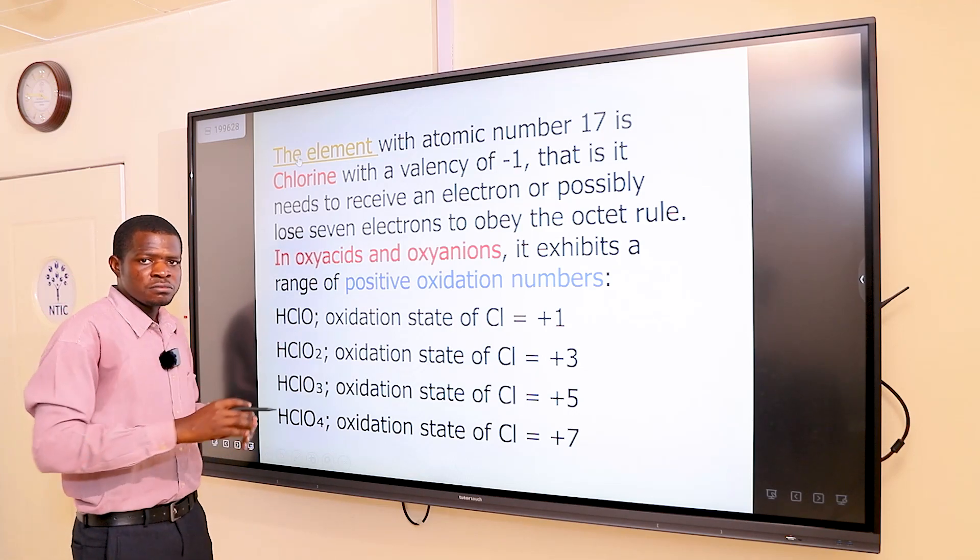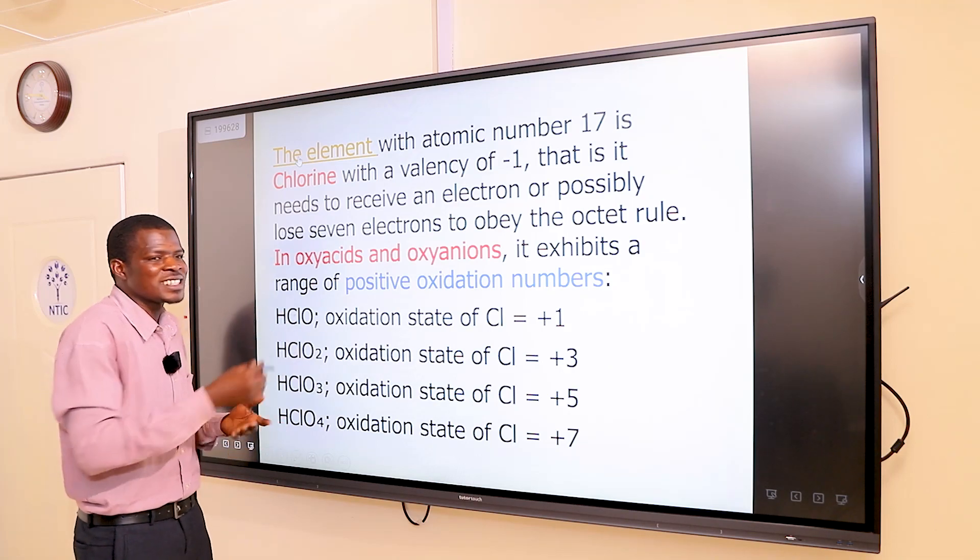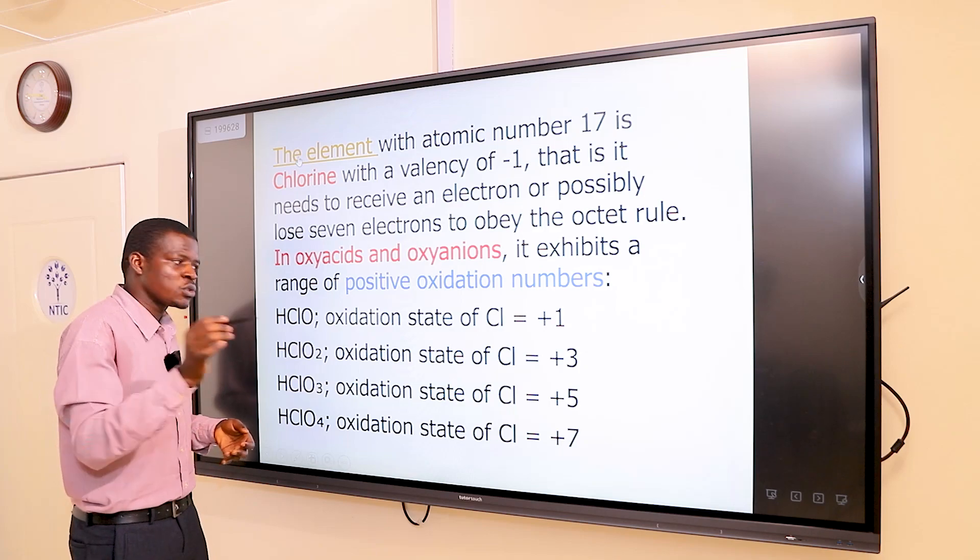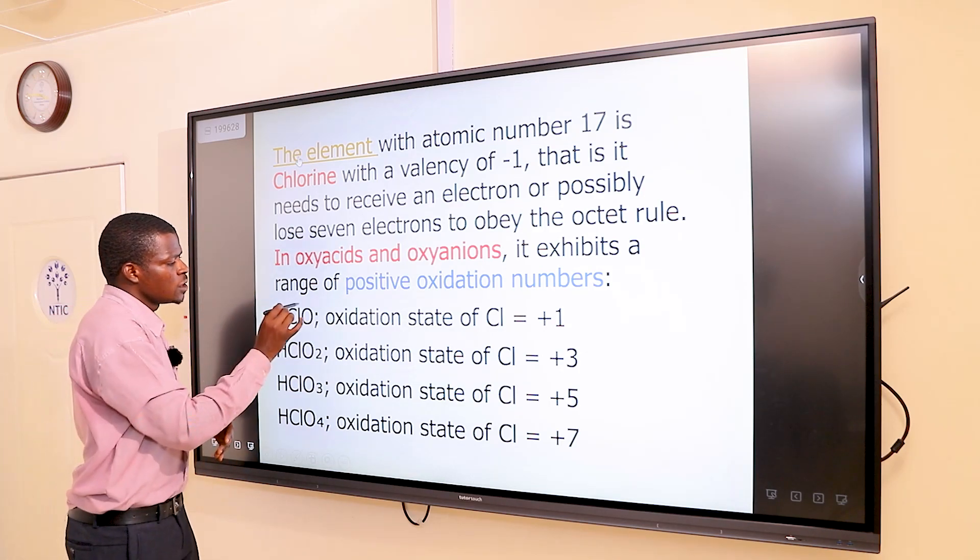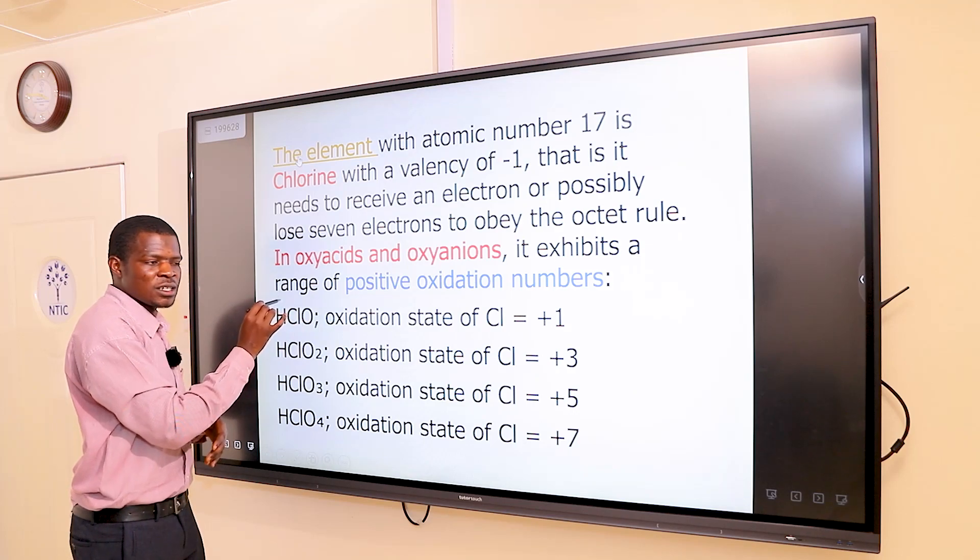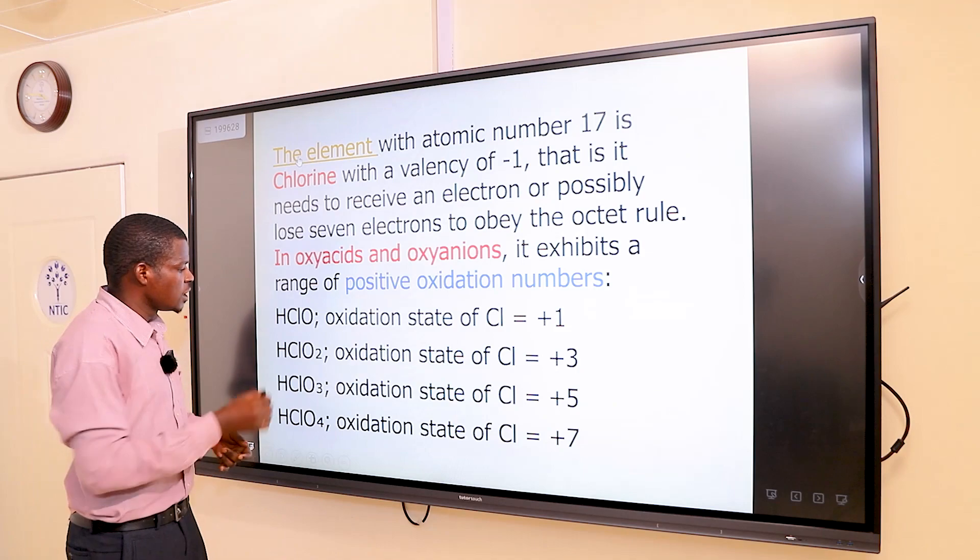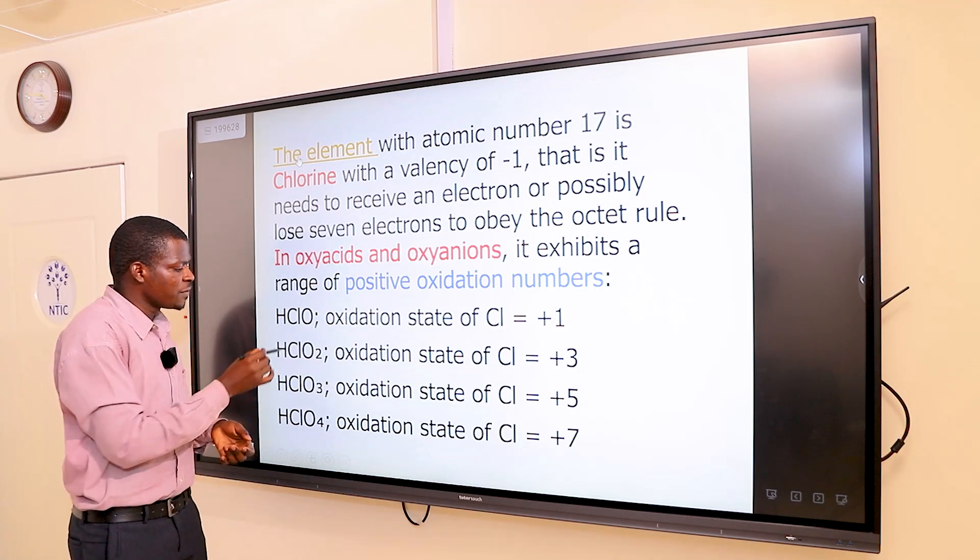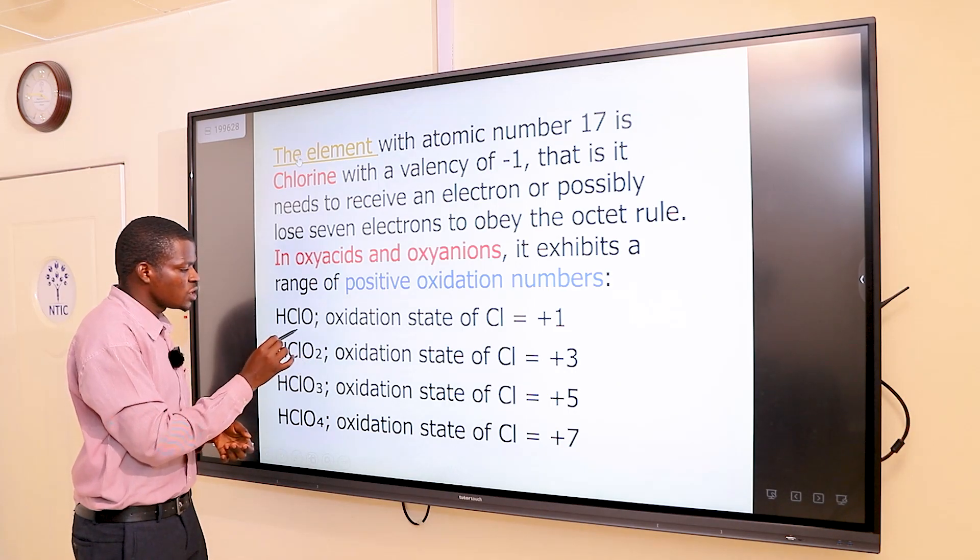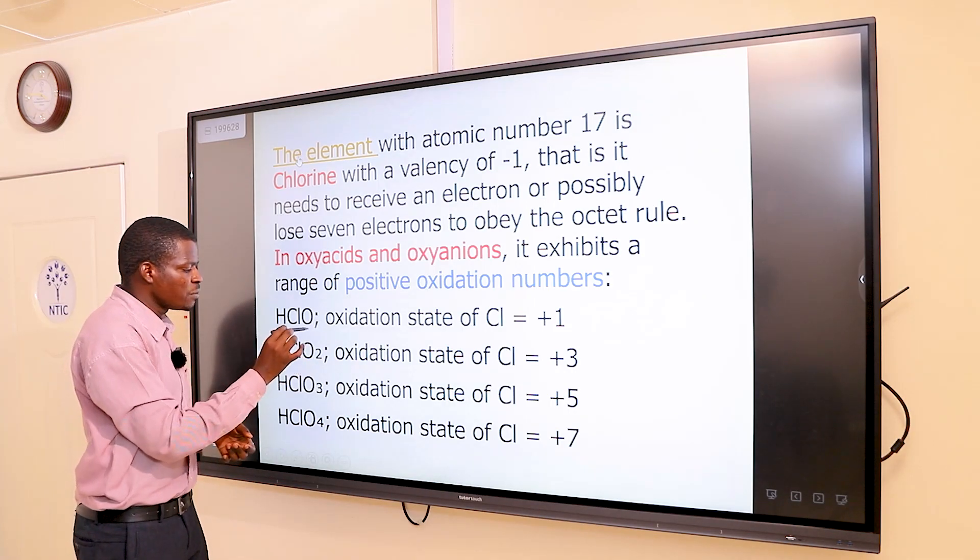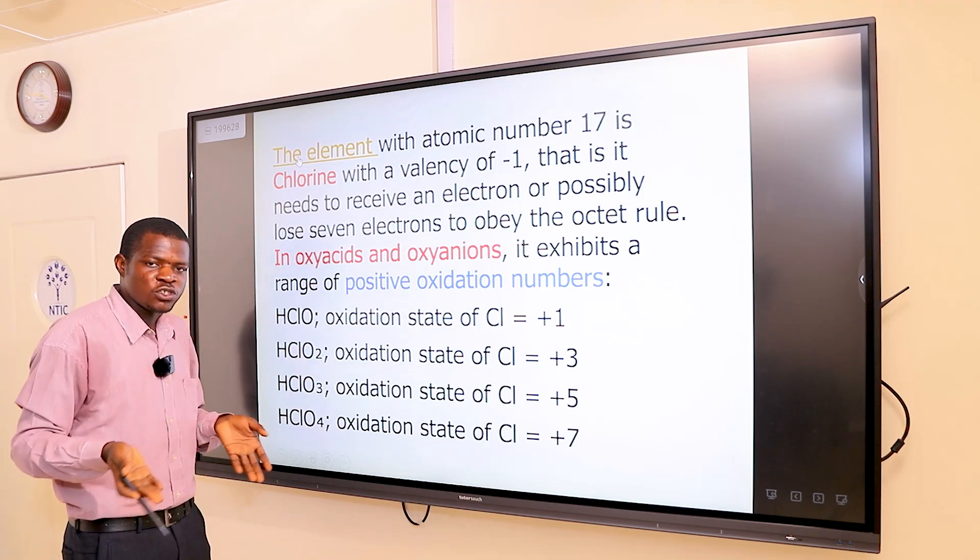How am I getting these oxidation numbers? This compound is stable. It's balanced because there is no charge, meaning the overall charge is zero. Remember, oxygen has a charge of minus two. Hydrogen has a charge of plus one as ions. Minus two plus one, I have plus one. That's why chlorine is plus one. Here, oxygen is minus two. Minus two times two is minus four. Hydrogen is plus one. Minus four plus one, I'm having minus three. So chlorine must be plus three for the overall charge to be zero.